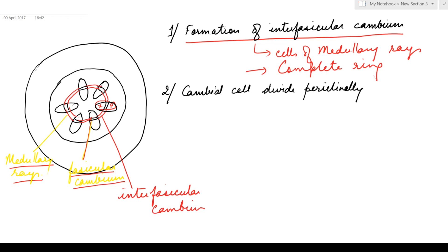The cambium cells divide periclinally. Periclinally means they divide parallel to the outer surface. Now when a cambium cell divides, it divides to produce two cells. Of the two cells, one will remain as the cambium cell so that it can divide further.